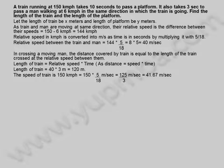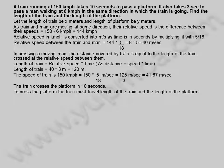The speed of train is 150 kilometers per hour, equals 150 into 5 divided by 18 meters per second, equals 125 by 3 meters per second, equals 41.67 meters per second. The train crosses the platform in 10 seconds. To cross the platform, the train must travel the length of the train and the length of the platform.